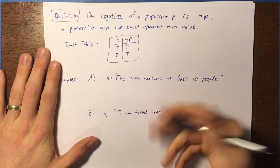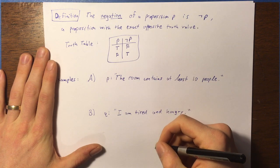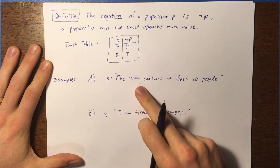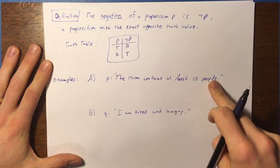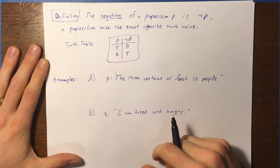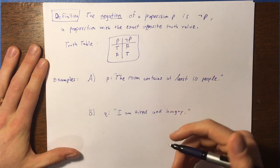So that's the negation of P. We're going to go over a couple of examples. So first, let's say P is the proposition: The room contains at least 10 people. Let's try to find out what not P would be. And we're going to try to express not P verbally so that we understand what it means.